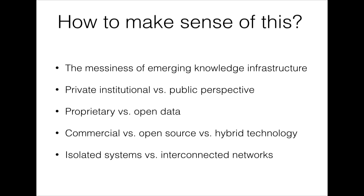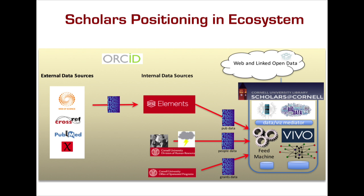Is this just the messiness of an emerging knowledge infrastructure? Emerging infrastructure, by definition, can be very messy as different players enter the game — there are redundancies, winners and losers. Are these different players focusing on an institutional perspective around faculty reporting and metrics, or on outward knowledge for the public good — open knowledge versus proprietary data? Commercial versus open source versus hybrid technology? There's a tension between isolated systems and interconnected networks. We're definitely in the hybrid network paradigm, thinking of it as scholarly infrastructure.